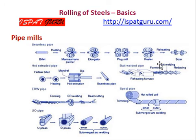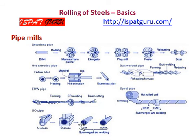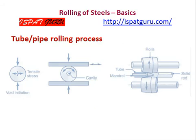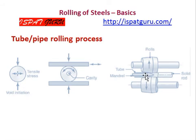This is a butt welded pipe and a welded pipe. Various types of spiral pipes are shown here. A submerged arc weld process is used. Different types of pipe mills are shown. In the tube rod-in process, one can see the mandrel for piercing, where a solid rod is pierced by the mandrel.